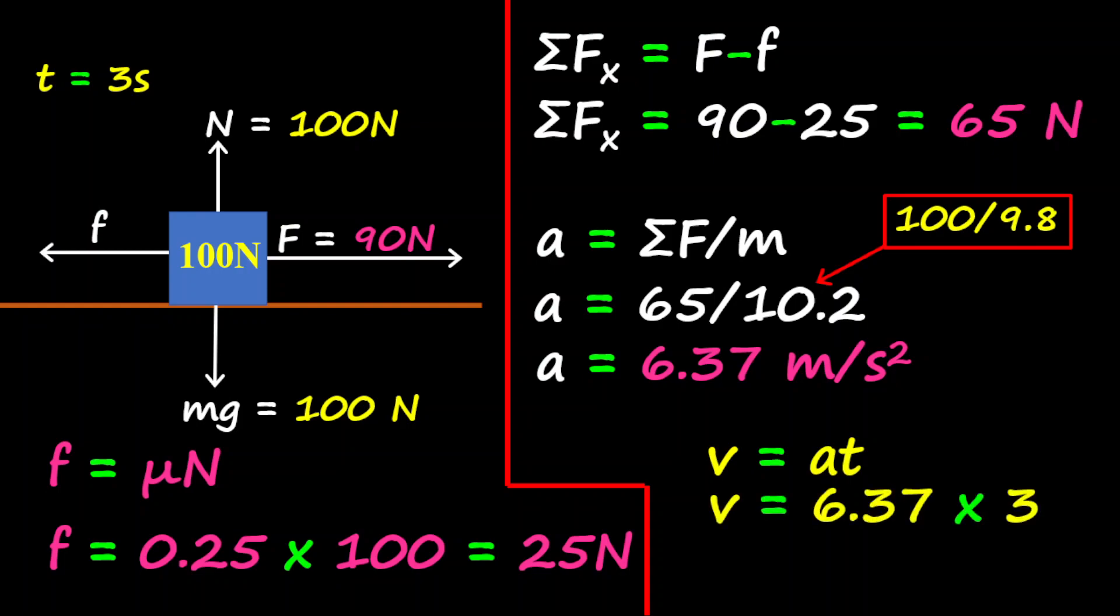So therefore, the velocity is equal to 6.37 multiplied by 3, and 3 is the time. So therefore, the velocity is 19.11 meters per second.